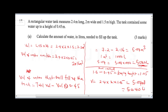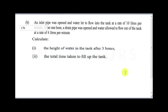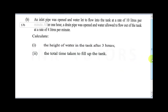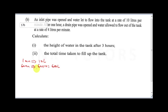For part B: an inlet pipe was opened and water allowed to flow into the tank at a rate of 10 liters per minute. After one hour, a drain pipe was opened and water allowed to flow out at 4 liters per minute. Calculate the height of water after three hours. In the first 60 minutes, 60 times 10 gives 600 liters flowing in.